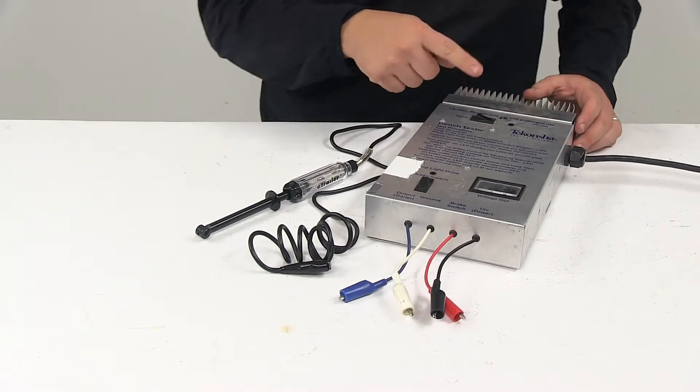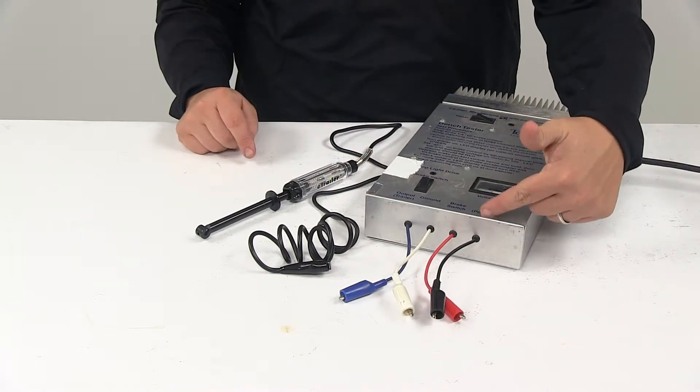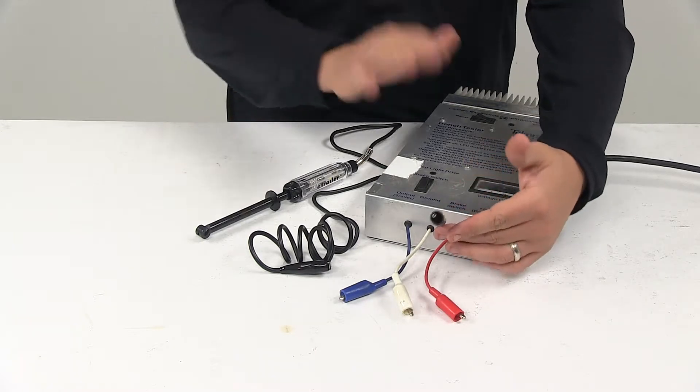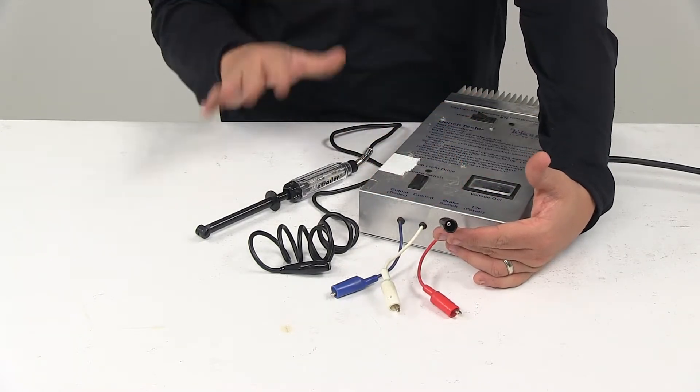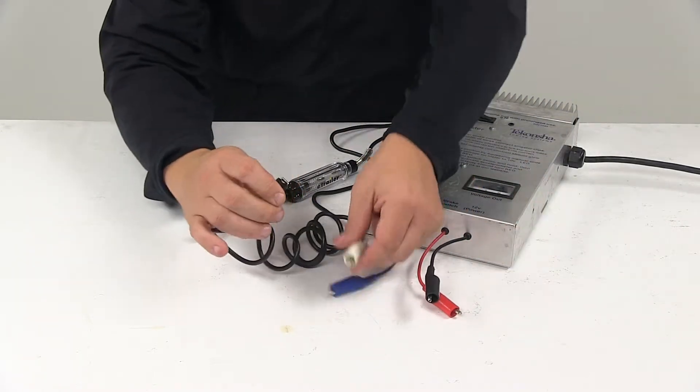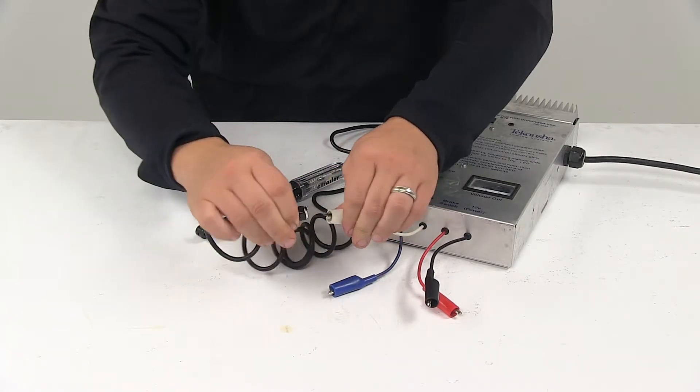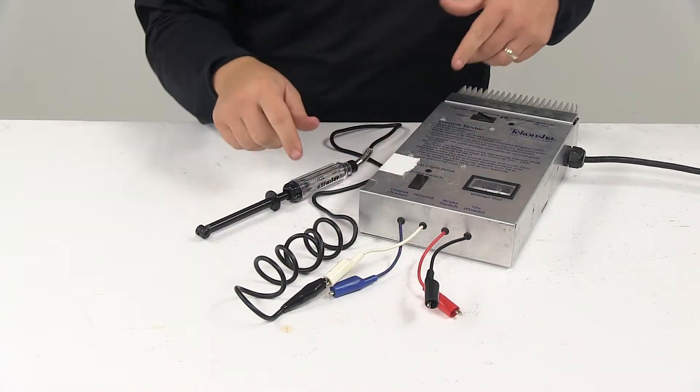So with power running to it, that means that my 12-volt supply, which is my black wire here, has power. So to test that, I need to hook this to my ground connection. It's just a big alligator clip. So I'm grounded.